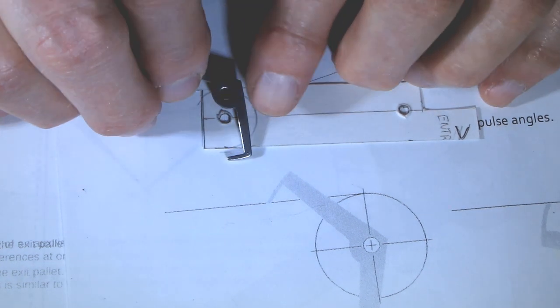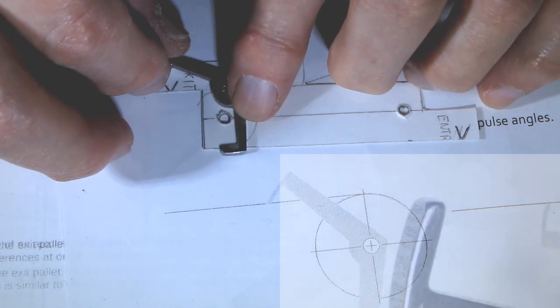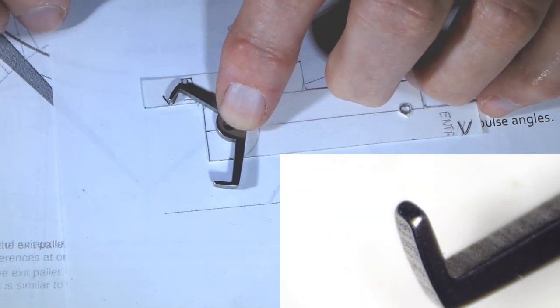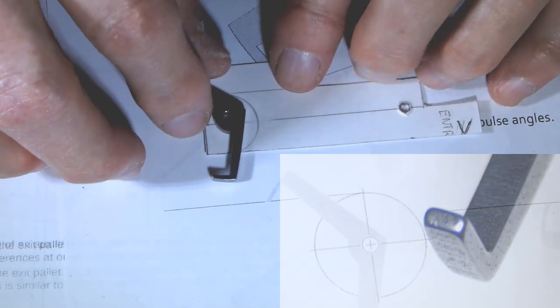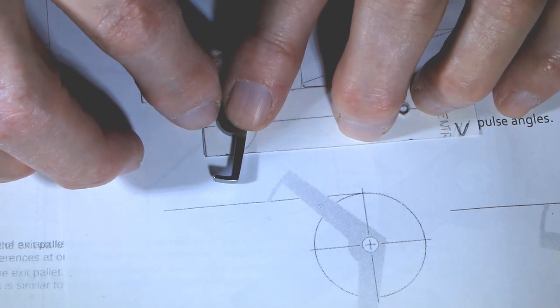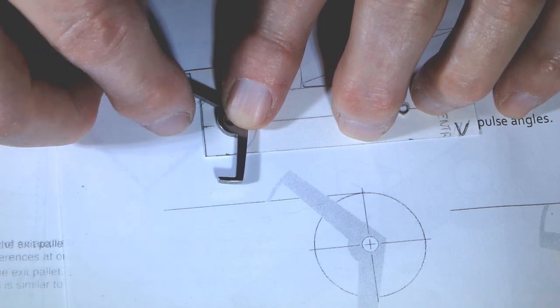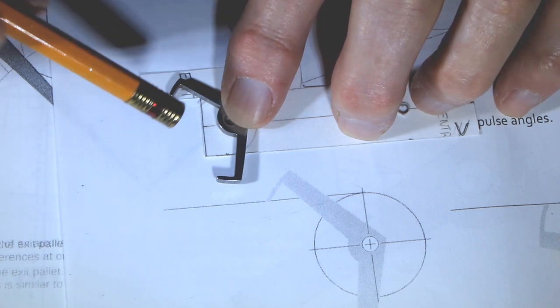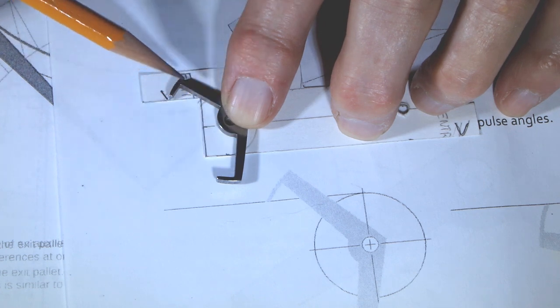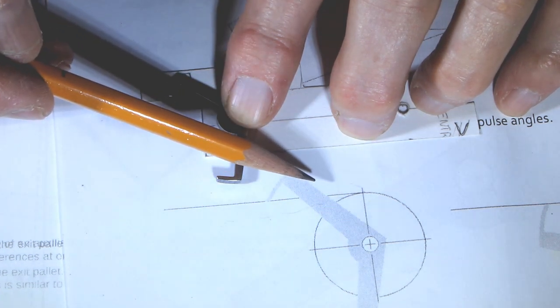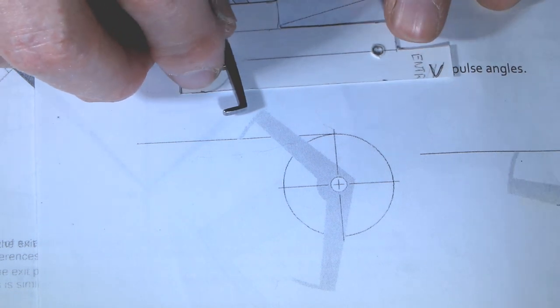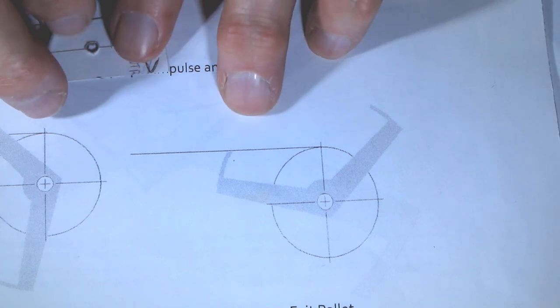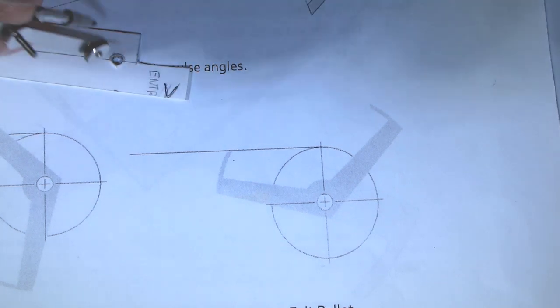I purchased a blank verge and it has pallets that are not ready for use in the clock. I actually animated the drawing using the template and the blank verge. This is how it looks like in relation to the exit pallet.